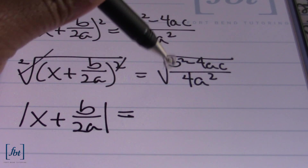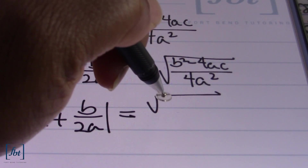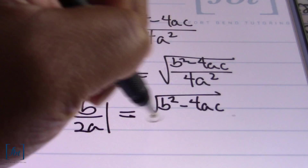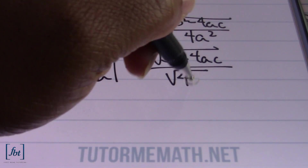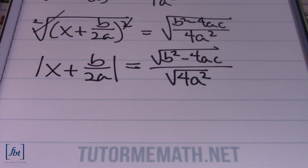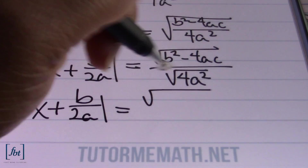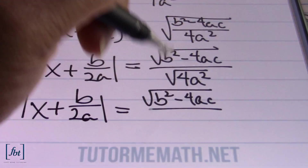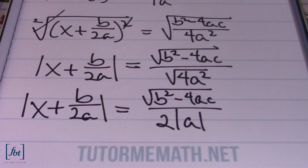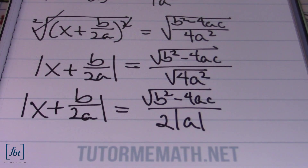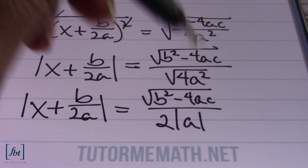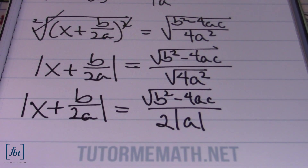On our right side, we break up the square root to show the square root of b squared minus 4ac in the numerator and the square root of 4a squared in the denominator. Simplifying the square root of 4a squared gives us the absolute value of x plus b over 2a equals the square root of b squared minus 4ac divided by 2 times the absolute value of a. Because we don't know what the value of a will be in any given problem — sometimes it's negative, sometimes positive — we need to guarantee our value of a is positive. This is a true statement, so let's continue solving for x.